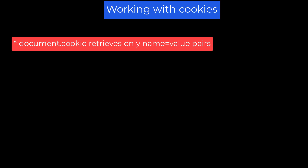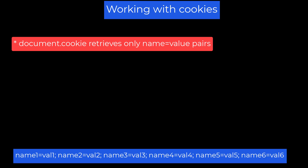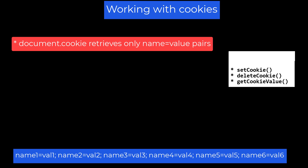Working with cookies: when you retrieve the document.cookie string, you only get the name-value pairs separated by a semicolon space. You won't see any of the other optional parameters such as maxAge. The cookie string can be long and may contain cookies you don't care about. So I built three functions to simplify working with cookies, put in a small file in your mywebfiles directory named cookies.js. What follows is a description of the functions, how to invoke them, and an exploration of the code. You can skip the detailed explanation of the function code if you like, but you will want to use these functions from time to time.